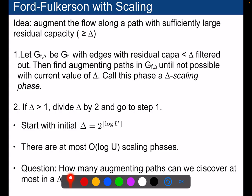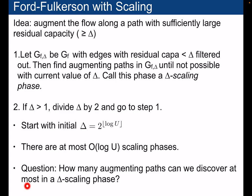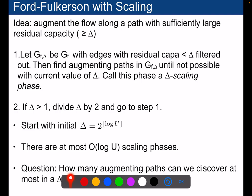So we start with a very large value for delta, for instance, 2 to the power log of U. And so we know that there will be at most this amount of downscaling phases for the value of delta until we reach one. The question now is how many augmenting paths can we discover at most in one delta scaling phase?